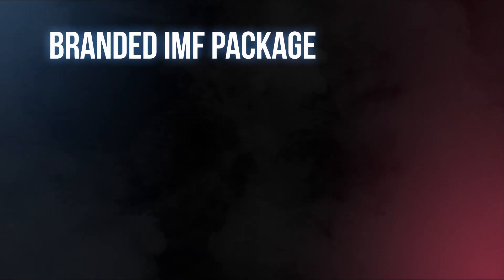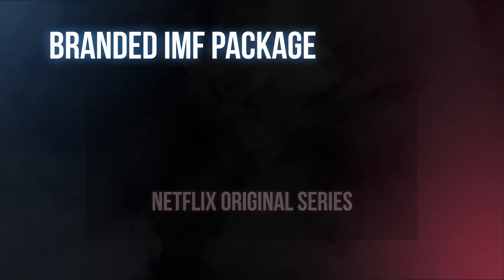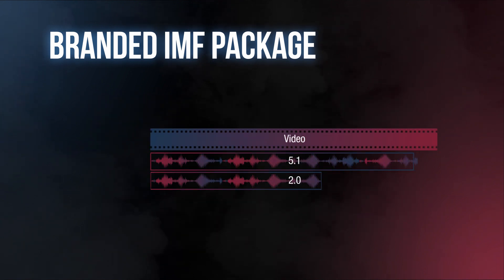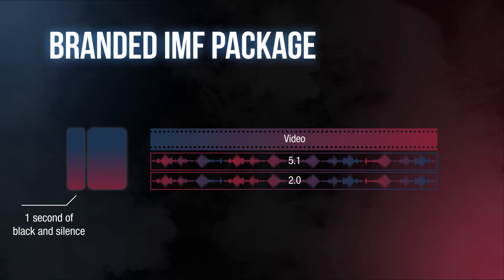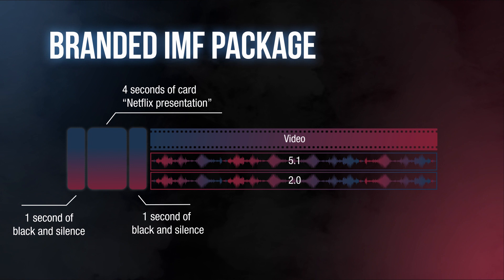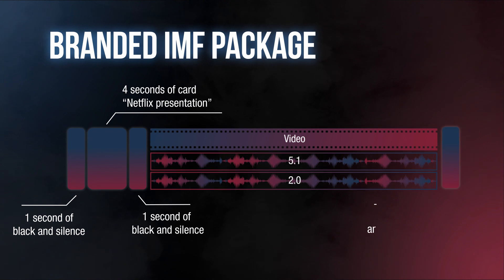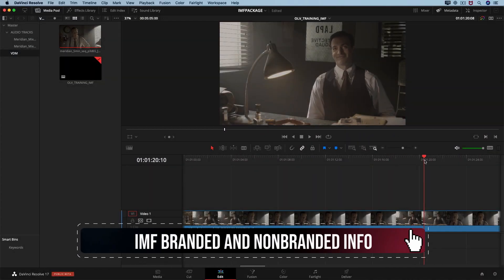We are creating a complete IMF package for a Netflix original. This version will contain the Netflix branding card at the start, making it a branded version. To correctly deliver these files, we add at the beginning: one second of black and silence, then four seconds of the Netflix presentation card, then one second of black and silence, then the full program with picture and sound, and at the end another second of black and silence.